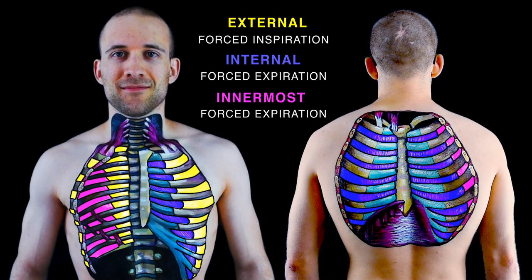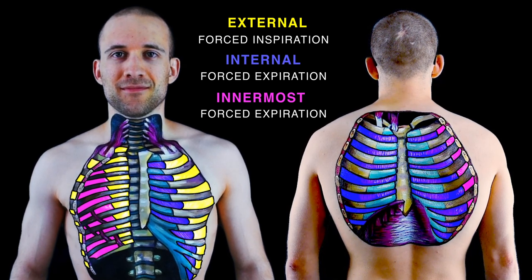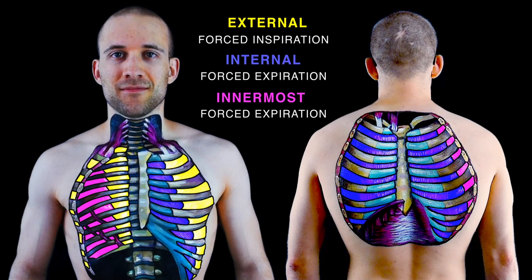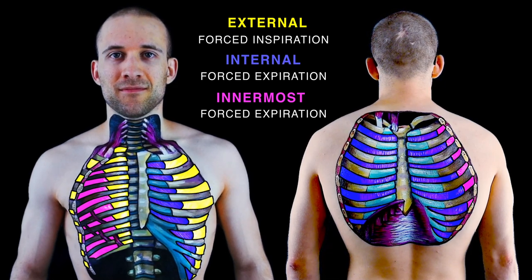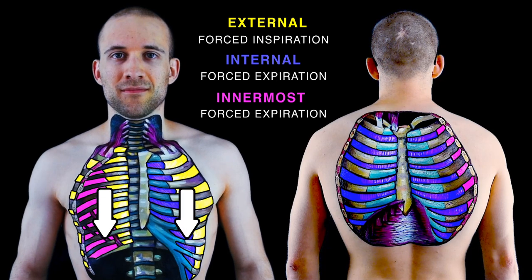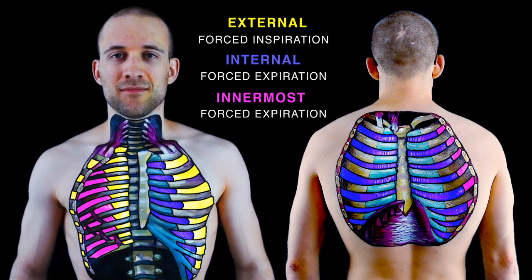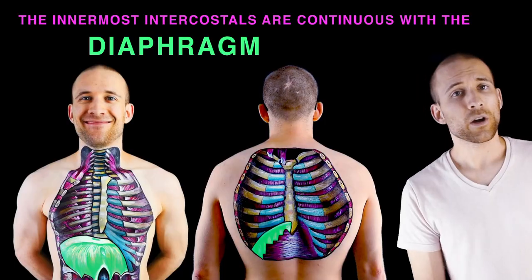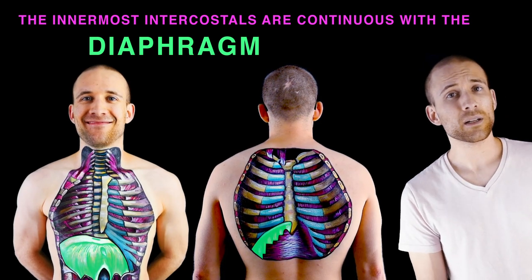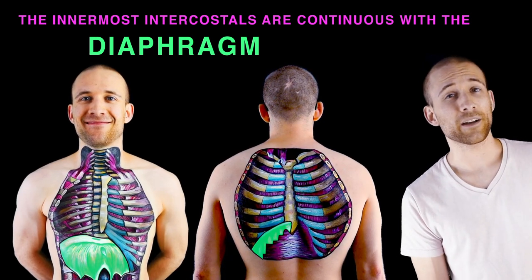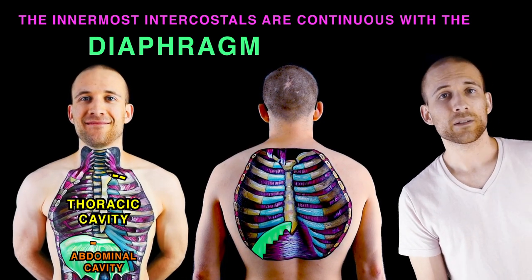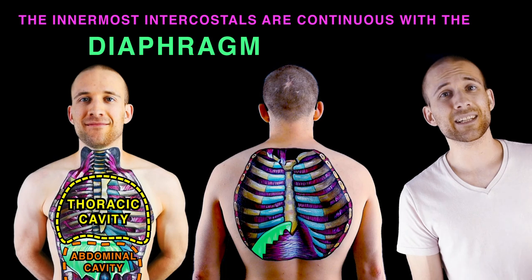Nearest the skin, external intercostal muscles obscure internal intercostals, the middle intercostal musculature. The innermost intercostals are the deepest muscle layer, pulling ribs down on exhalation — they're a key player. Note that this muscle is continuous with the diaphragm, which separates two cavities — see this diagram.